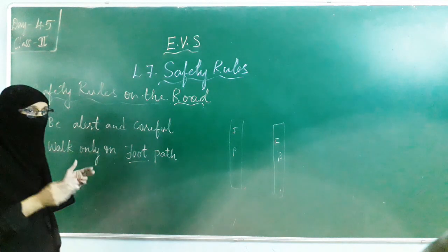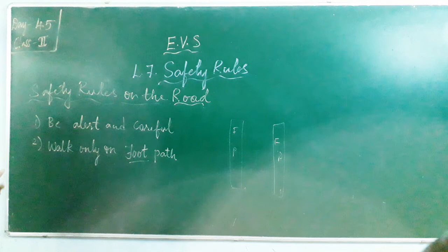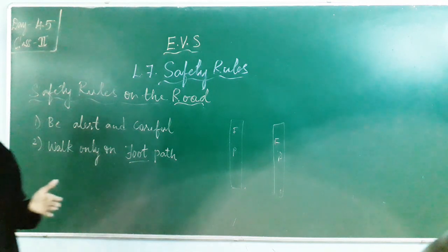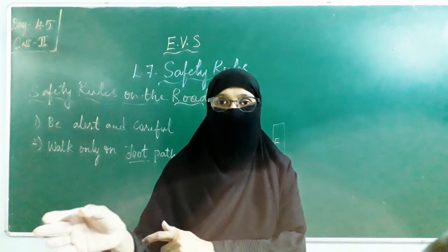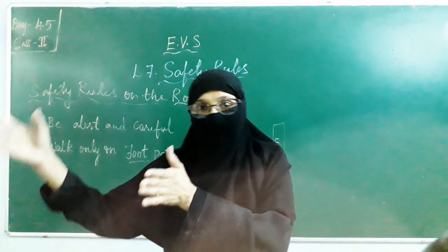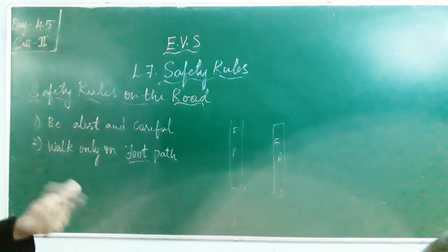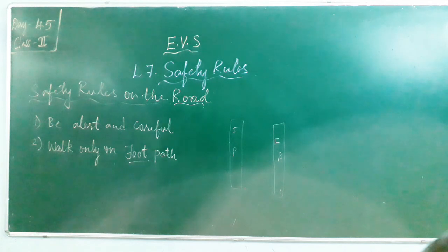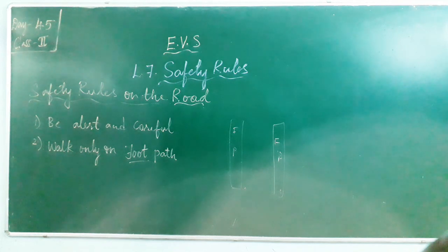You have to walk on the right side of the road. When you are walking, this is your right side. So what you have to do? Walk on the right side of the road facing the traffic, so that whichever vehicle is coming towards you, you can see it clearly.